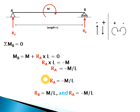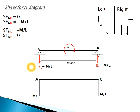Since Ra is negative, it acts in the downward direction. Now for the shear force diagram, the sign convention is: on the left side, upward force is positive and downward is negative; on the right side, it's the opposite.